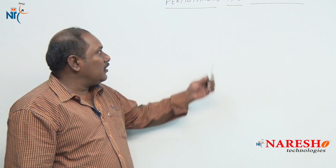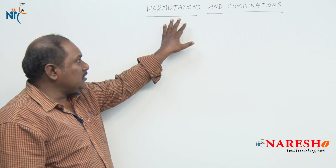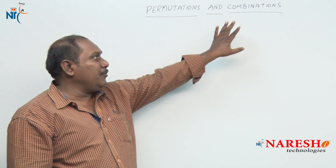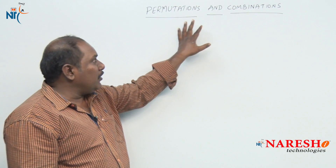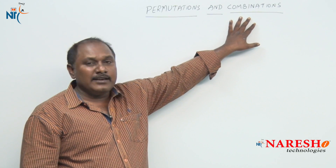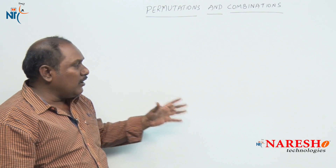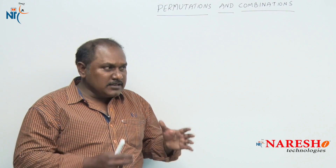Hi friends, welcome to Naresh IT Technologies. Today we are going to discuss a concept called permutations and combinations. Permutation in a single word is arrangement and combination in a single word is selection. Before we start solving the problems in this chapter, let us discuss some basic points — what do you mean by permutation and what do you mean by combination.